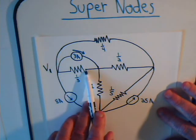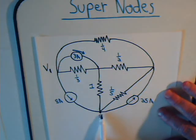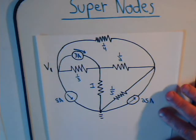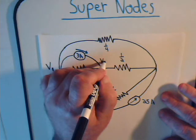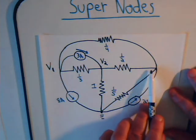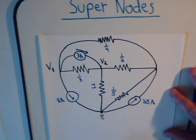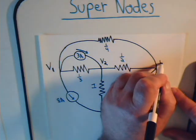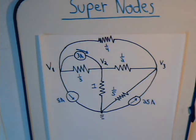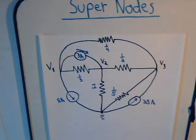Then here we have a node where this branch, this branch, this branch, and this branch all flow into it. We don't know what the voltage is, so we'll call it V1. Here's another node where this branch, this branch, this branch, and this branch flow into it — we'll say that node is at voltage V2. And then here is another node where these branches flow into it, and we'll say that is at a voltage of V3. Once we know these voltages, we can quite easily determine the currents through all of the resistors.